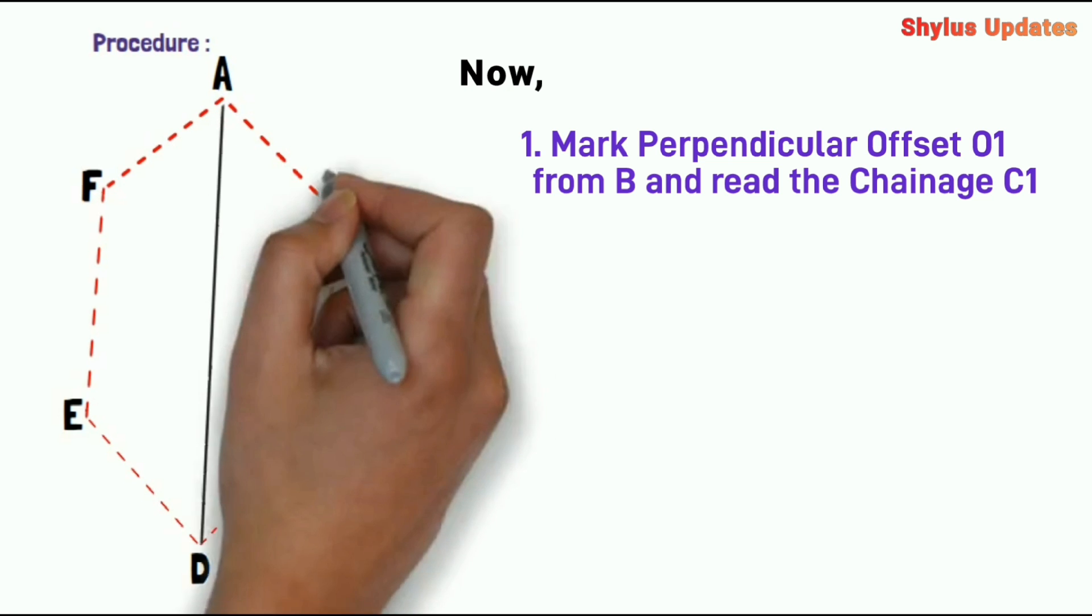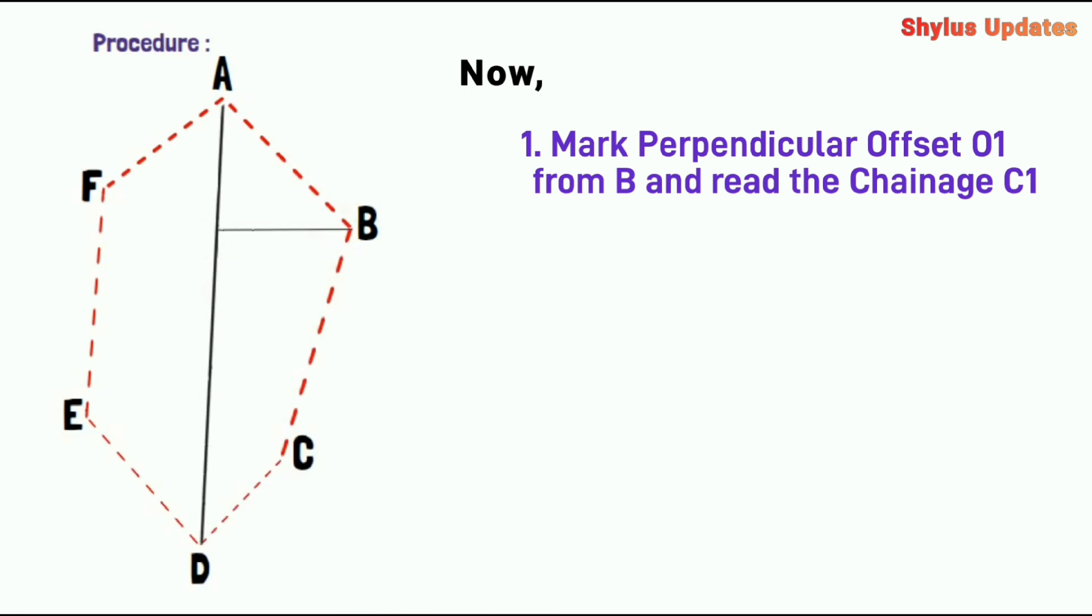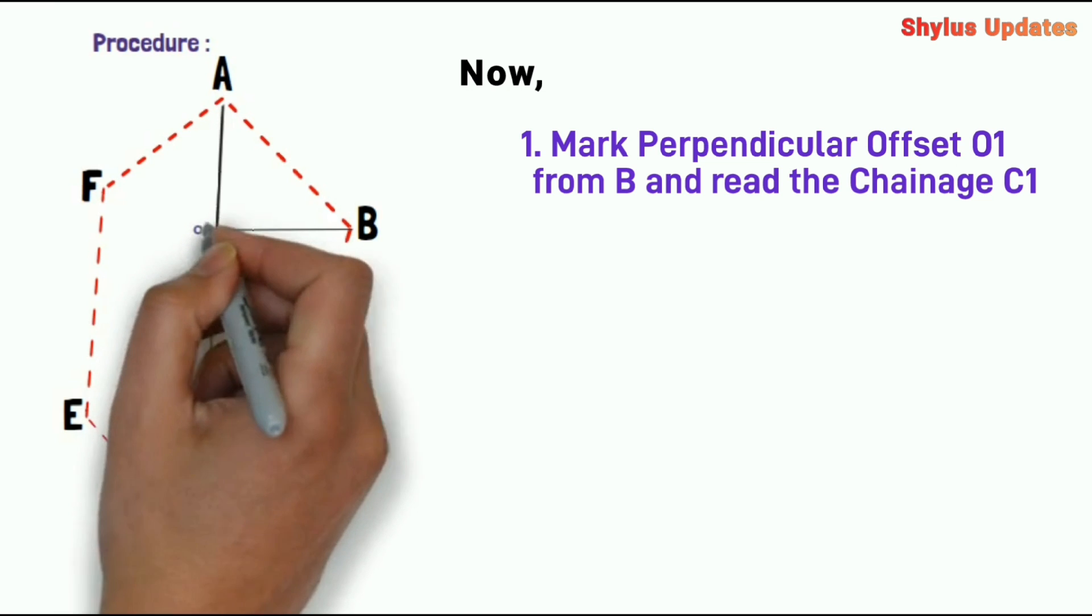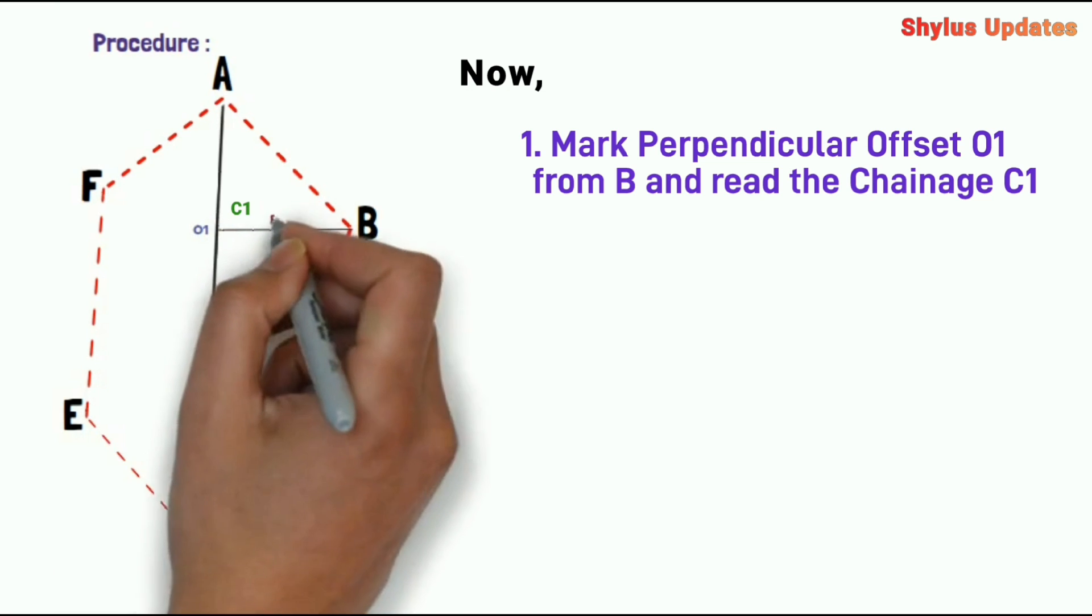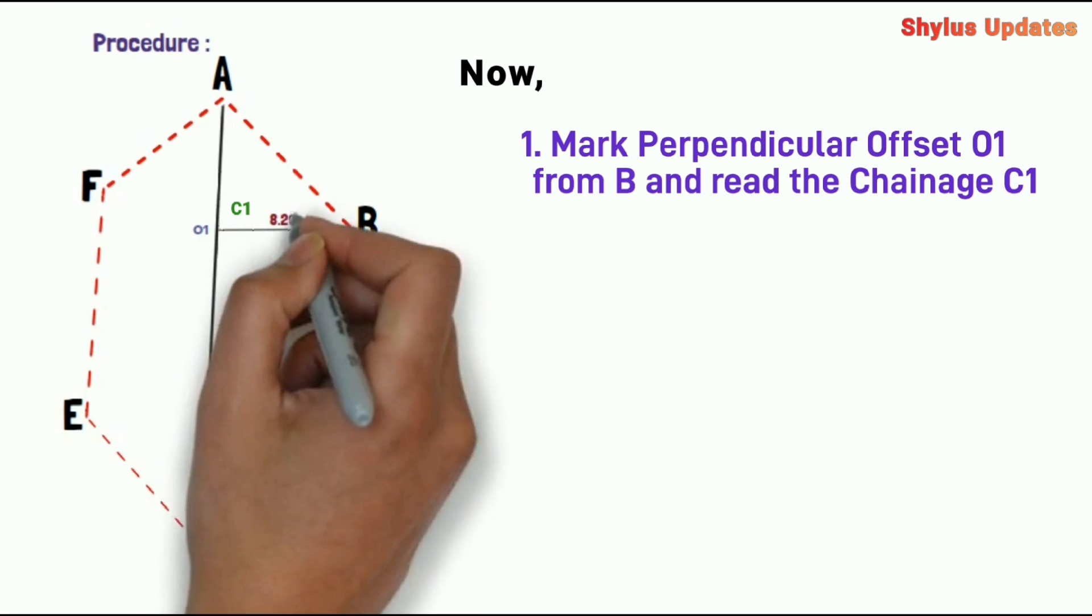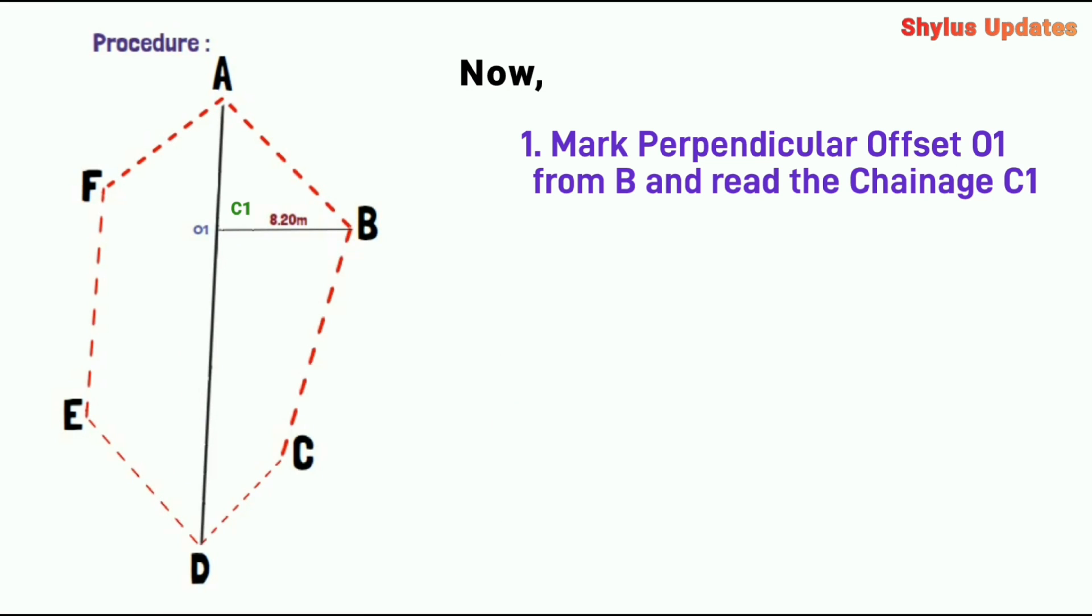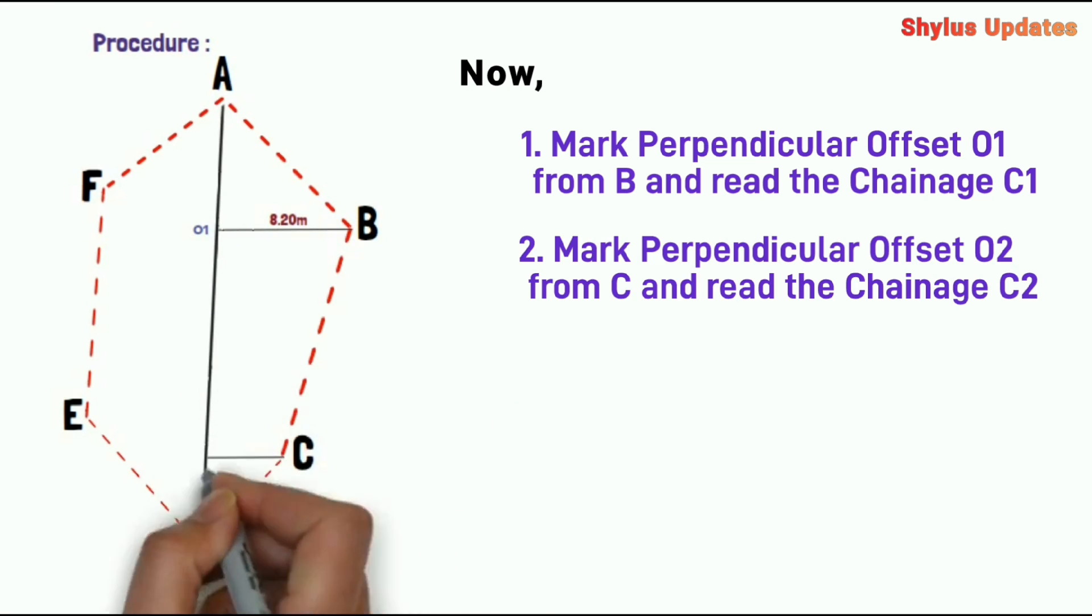Now mark the perpendicular offset O1 from B and read the chainage C1. When we measure, we get 8.20 meters. Next, mark perpendicular offset O2 from C and read the chainage C2.